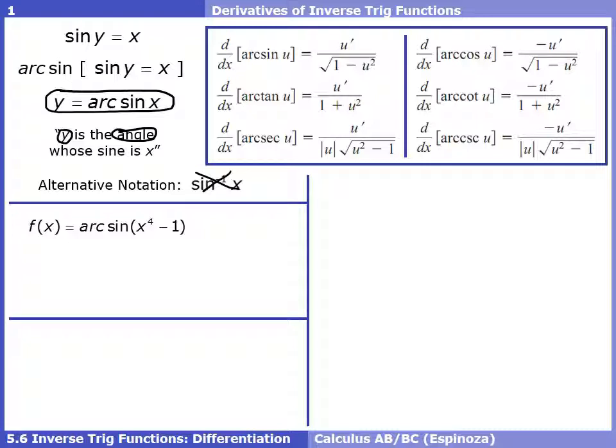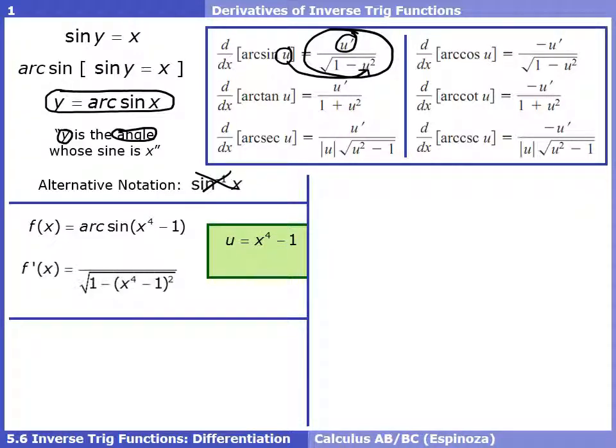Here we have the function arc sine of x to the fourth minus one. To take the derivative, we use the arc sine formula. Once you identify u, you put that in the formula, and in the top of the fraction, put u prime. In this case, u is x to the fourth minus one. So in the bottom of the derivative, it's the square root of one minus u squared, or x to the fourth minus one squared. On top, we put u prime, which is 4x cubed.